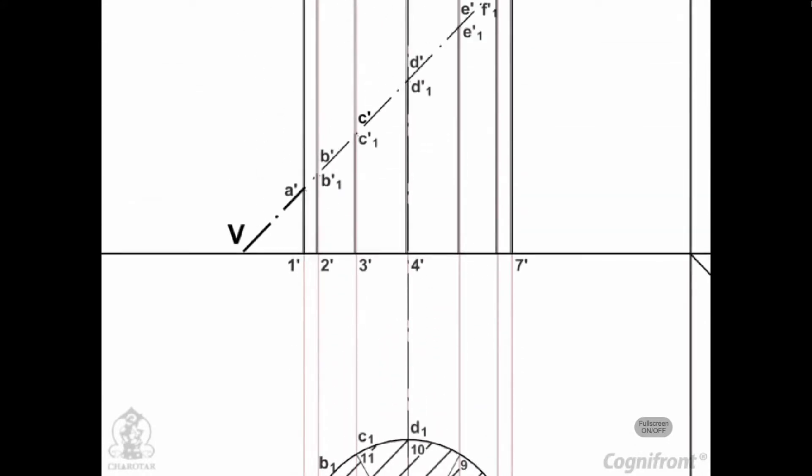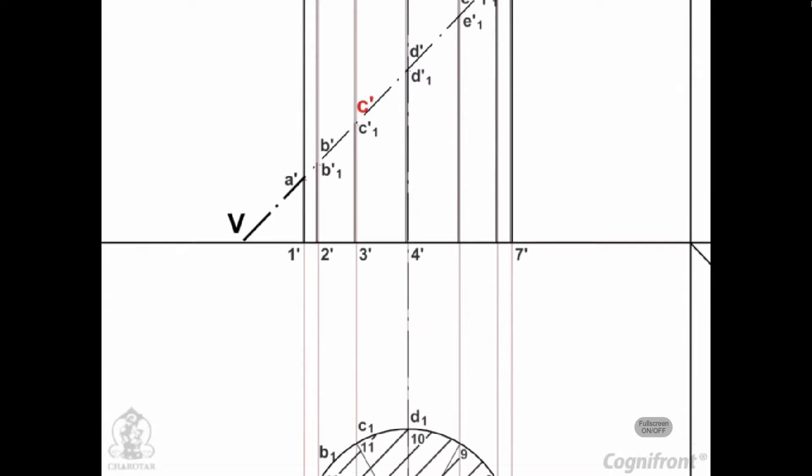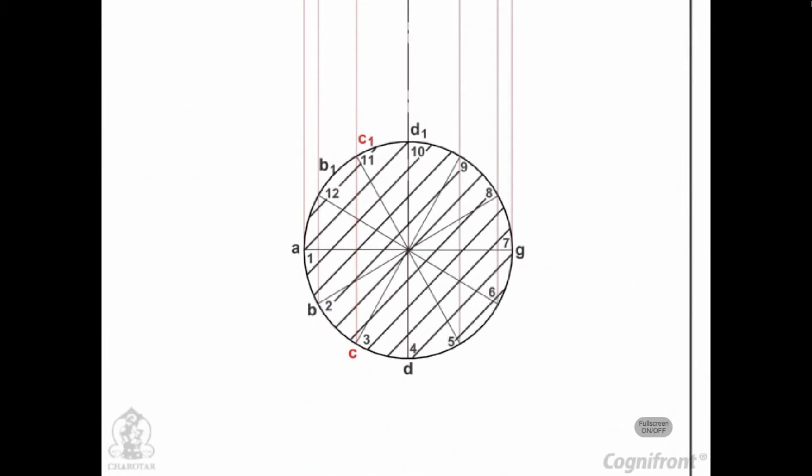The width of the section at any point, say C dash, will be equal to the length of the chord C C1 in the top view.